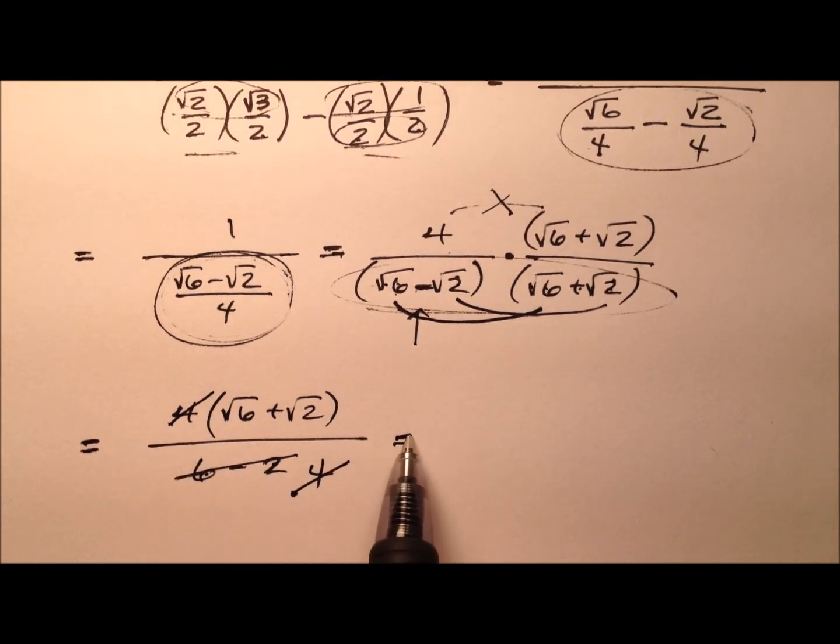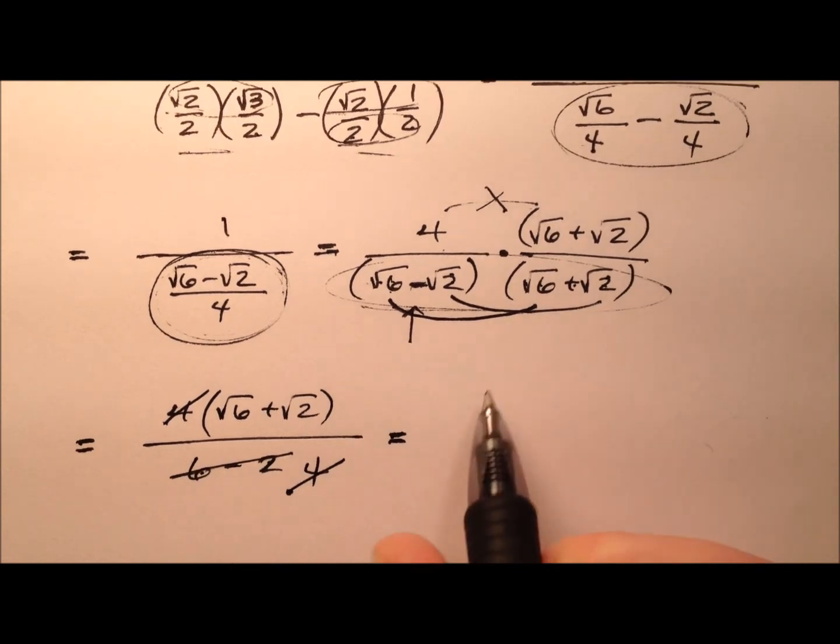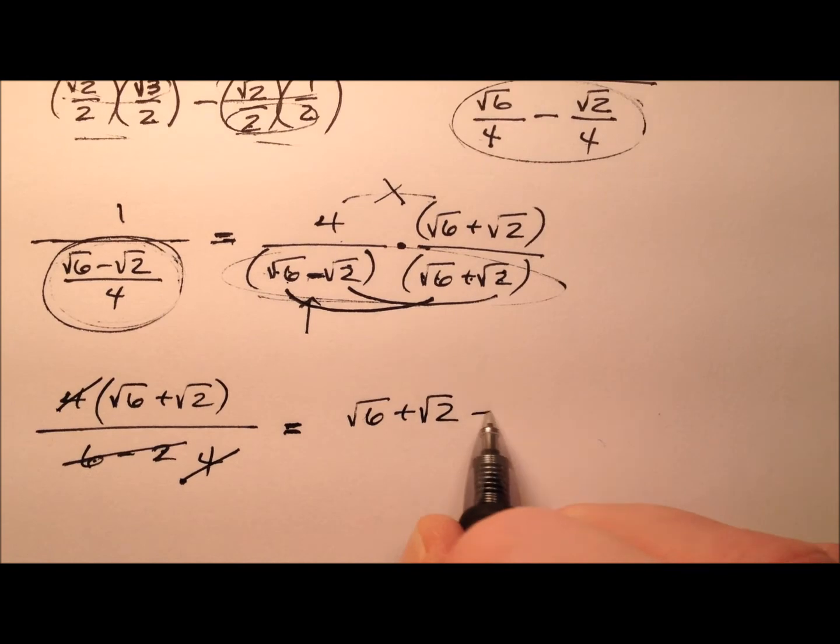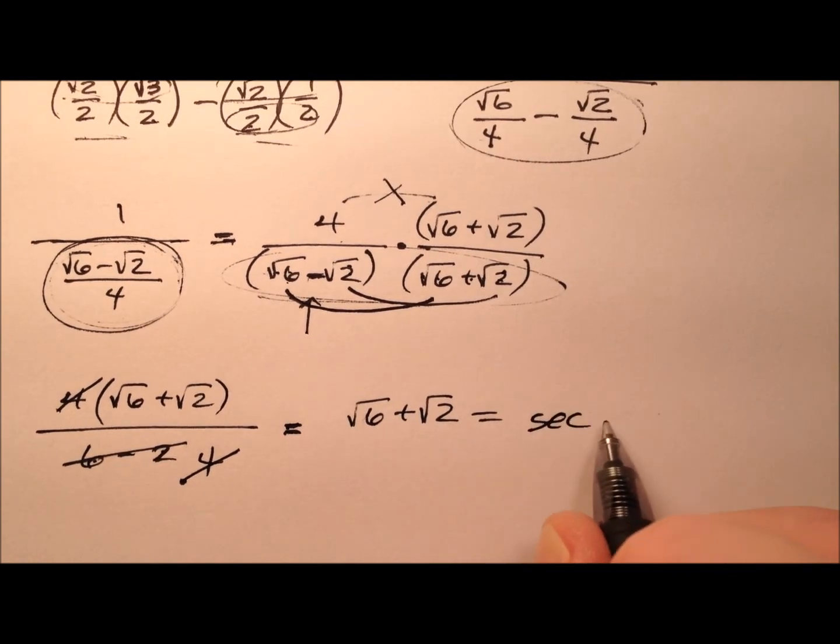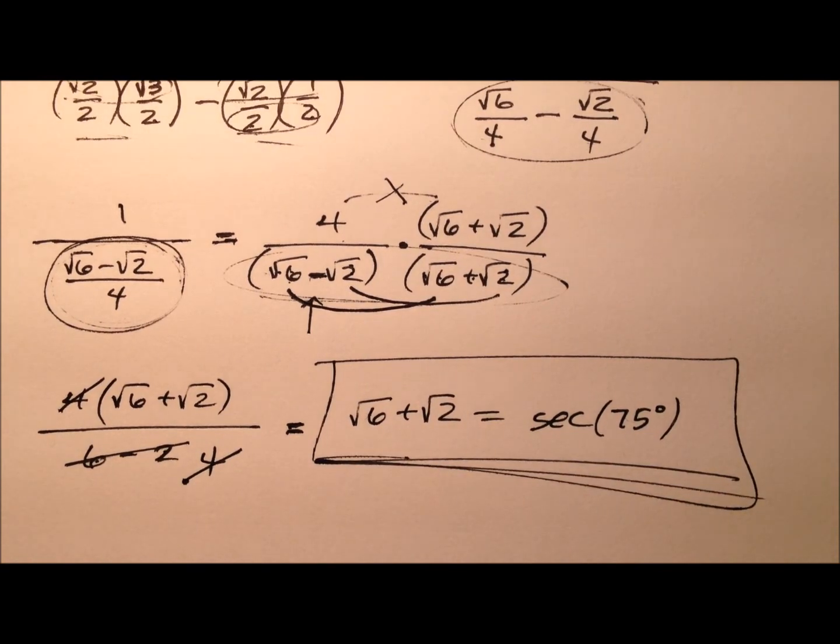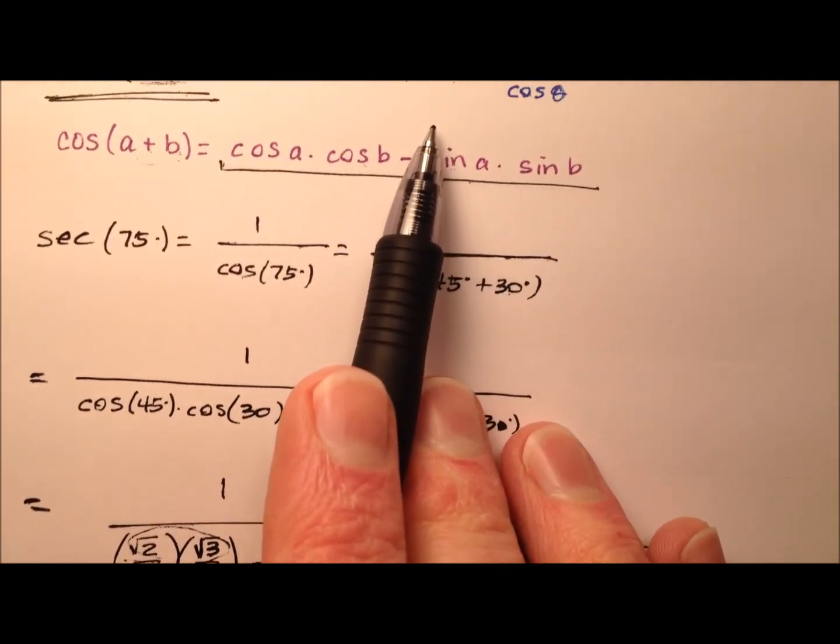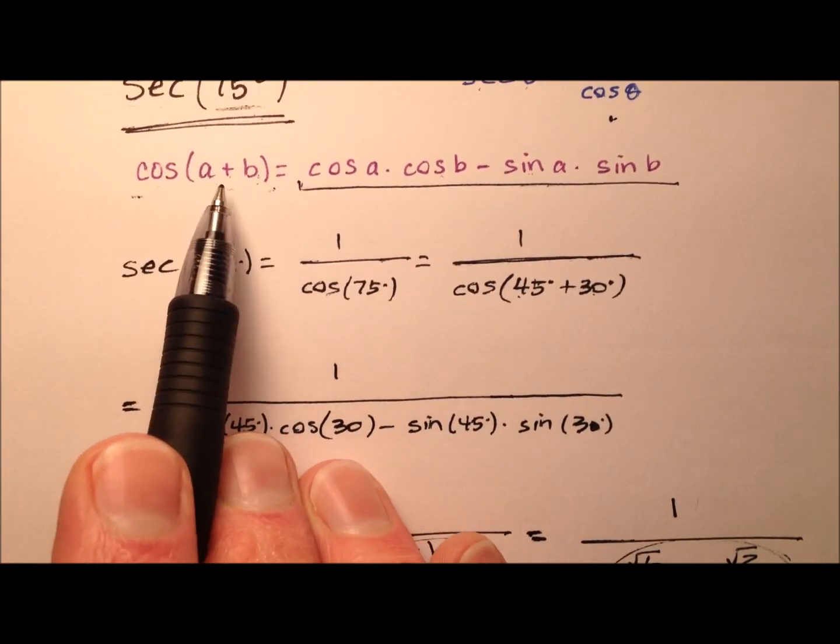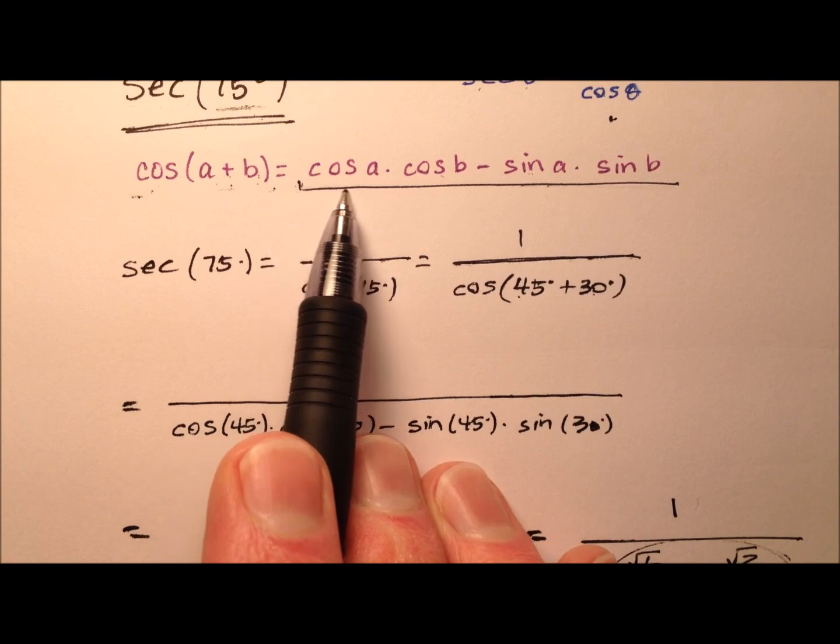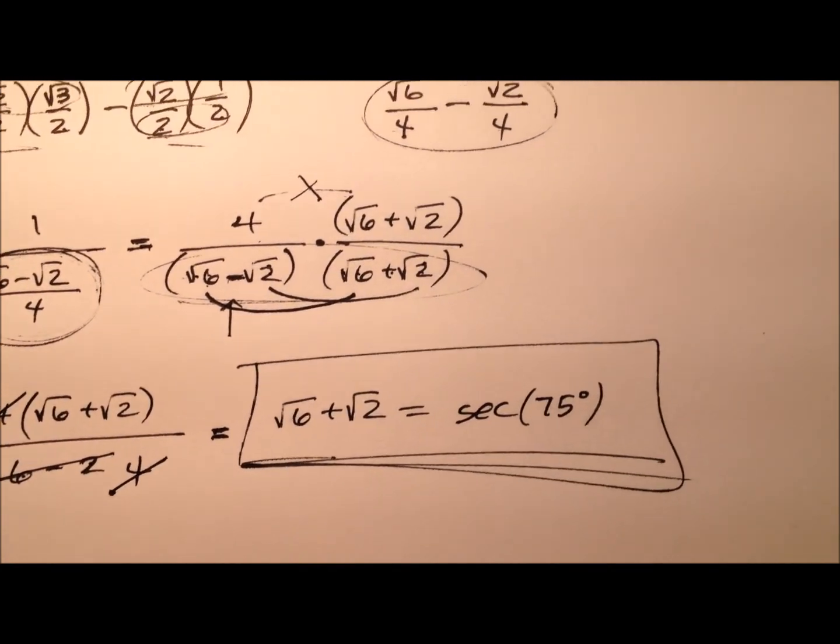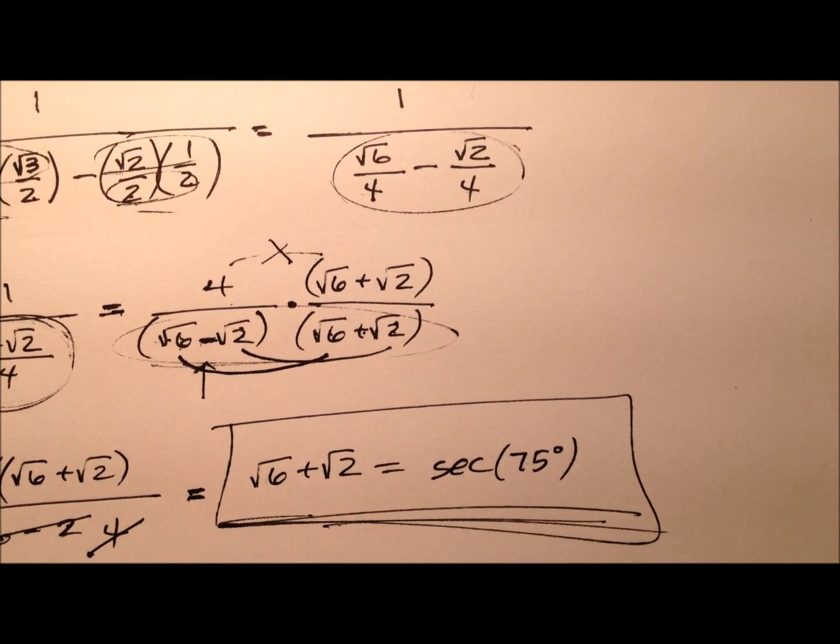So you can see exactly why we didn't distribute that 4 through there. So the square root of 6 plus the square root of 2, that is my exact value for the secant of 75 degrees. And we found that by using the reciprocal function, 1 over cosine, and then by employing the sum identity for cosine. So here's that value one more time for the secant of 75 degrees.